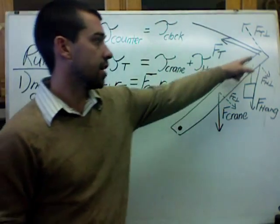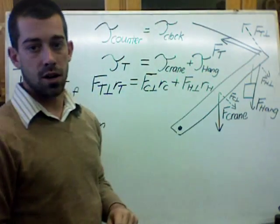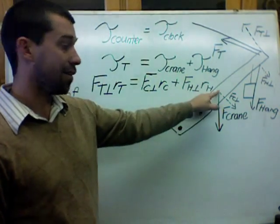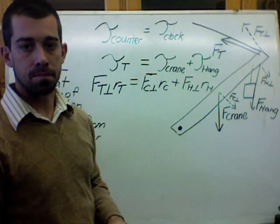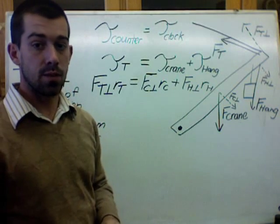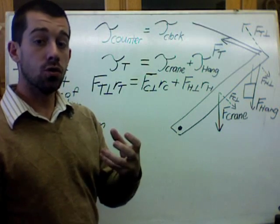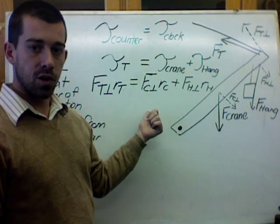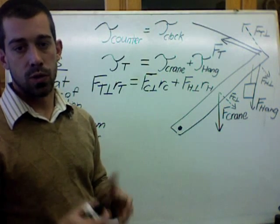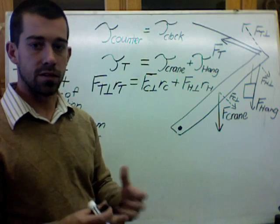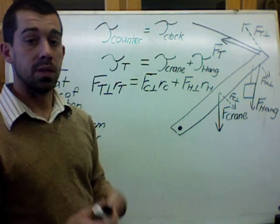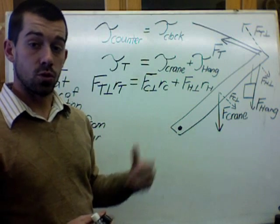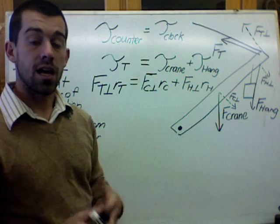For the force of tension, R would be the length of the entire crane arm. For the force of weight of the crane, R would be one-half the length of the crane arm. So when you're solving these problems, you need to pay attention to your R values as well. If you get this far, all you need to do is algebra to solve for anything in the problem, and so this is the majority of the physics.